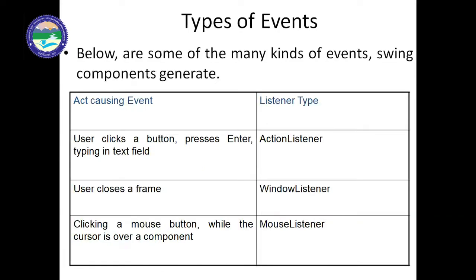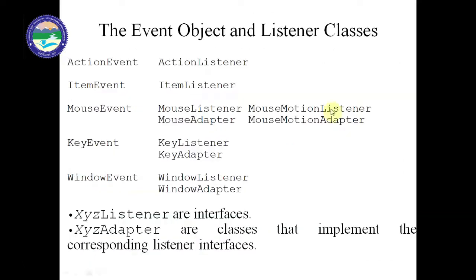We have ActionEvent in ActionListener and ItemEvent in ItemListener. For a checkbox we require ItemListener. For the mouse we require MouseListener and MouseMotionListener. We can also take help of MouseAdapter and MouseMotionAdapter — so either MouseListener or MouseAdapter can be used. Similarly, for keyboard events we require KeyListener and KeyAdapter — at a time we can use either one. We also have WindowListener and WindowAdapter, both used for window events.